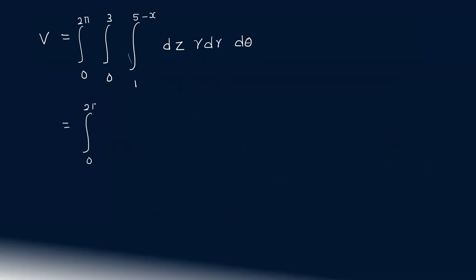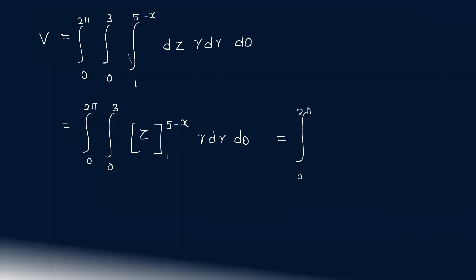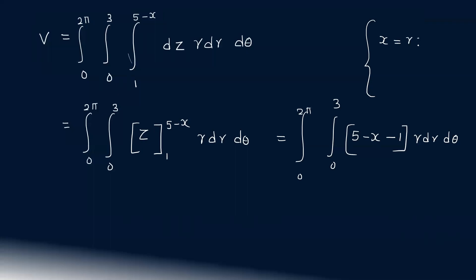The integral becomes: integral from 0 to 2π, integral from 0 to 3, integral from 1 to 5 minus r cosθ of dz, r dr dθ. Evaluating the inner z-integral gives (5 minus r cosθ minus 1) times r dr dθ.